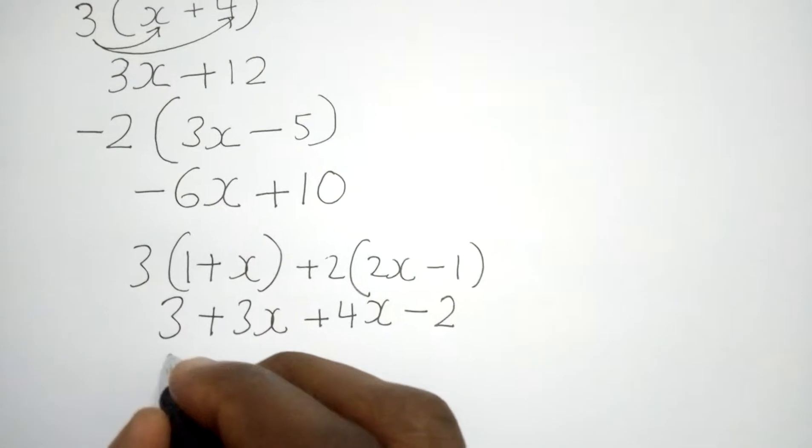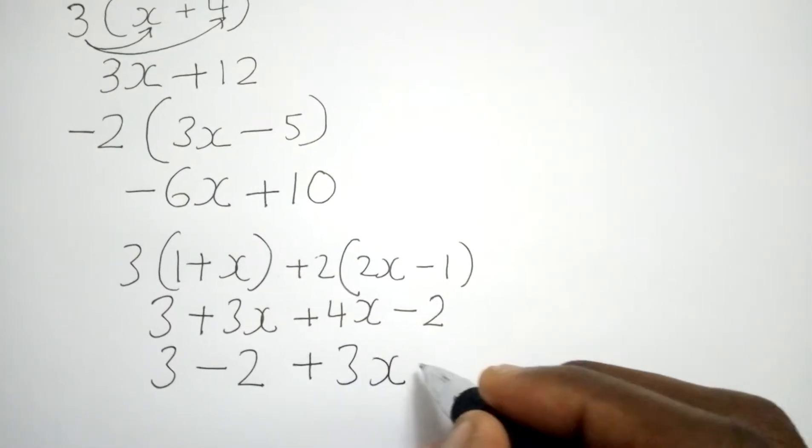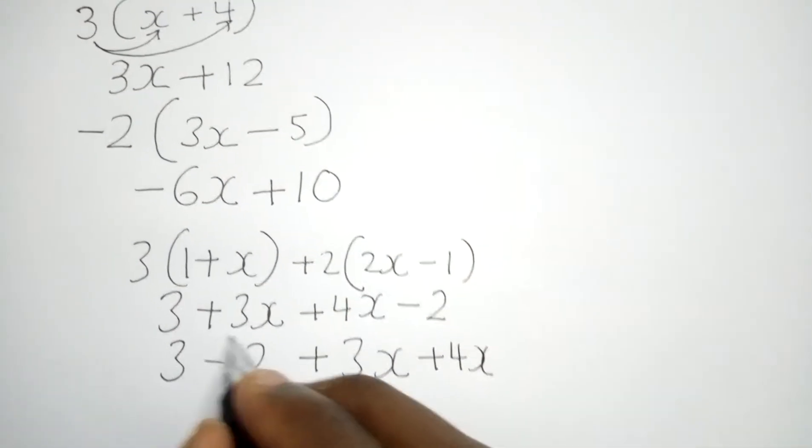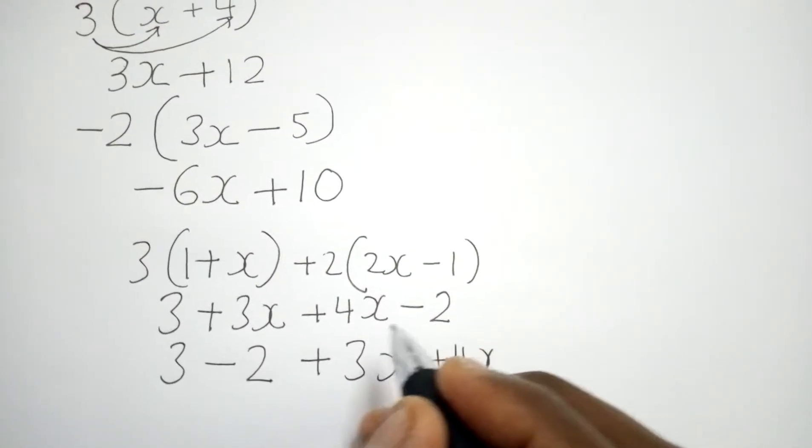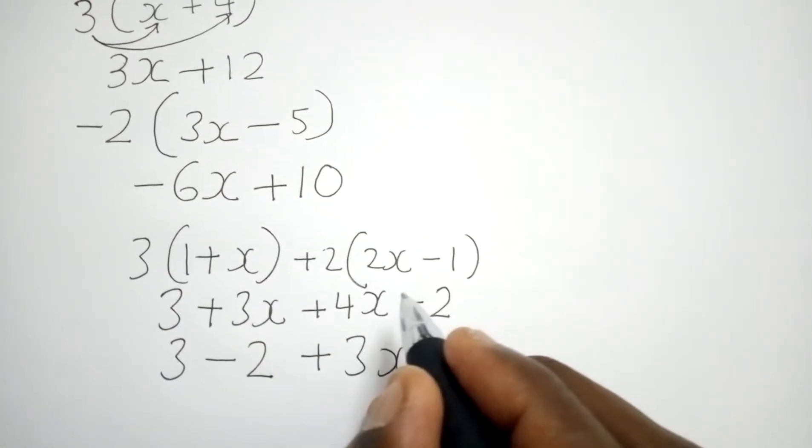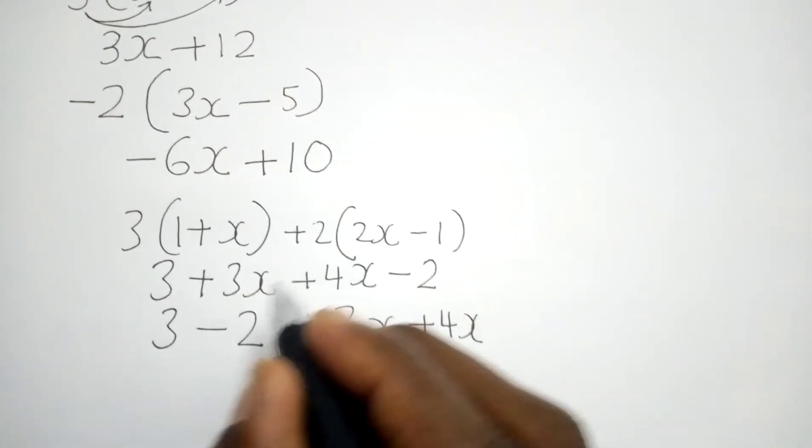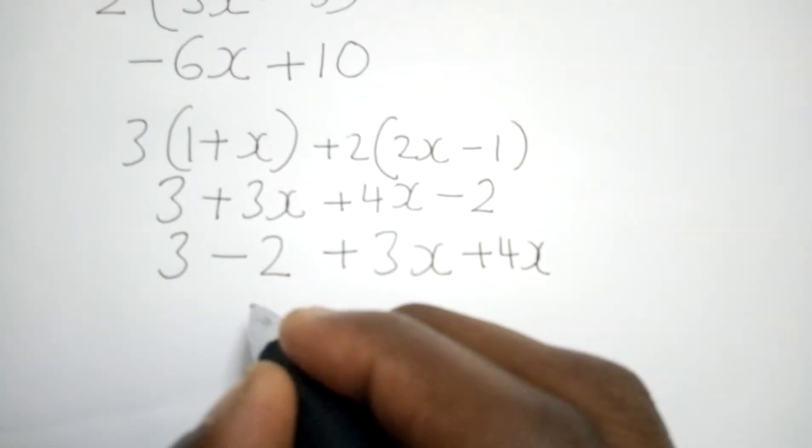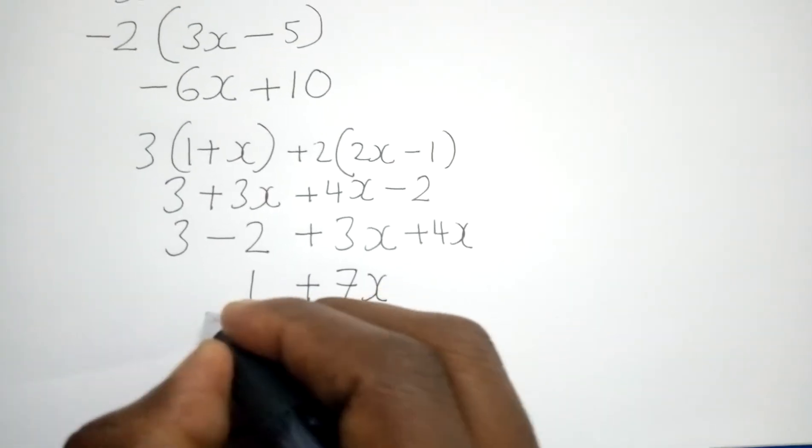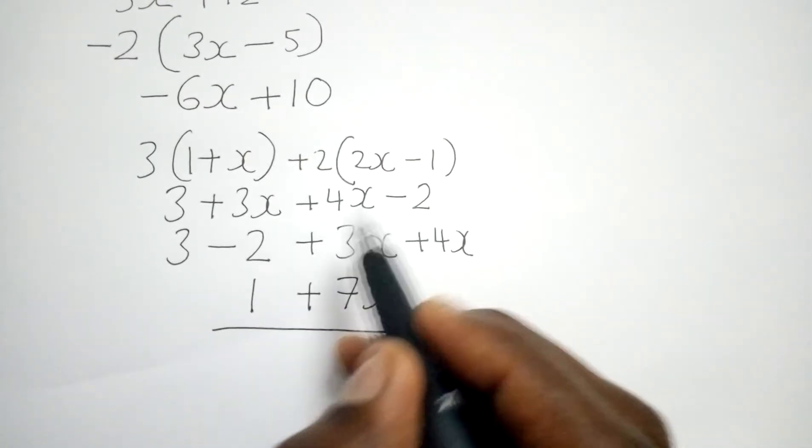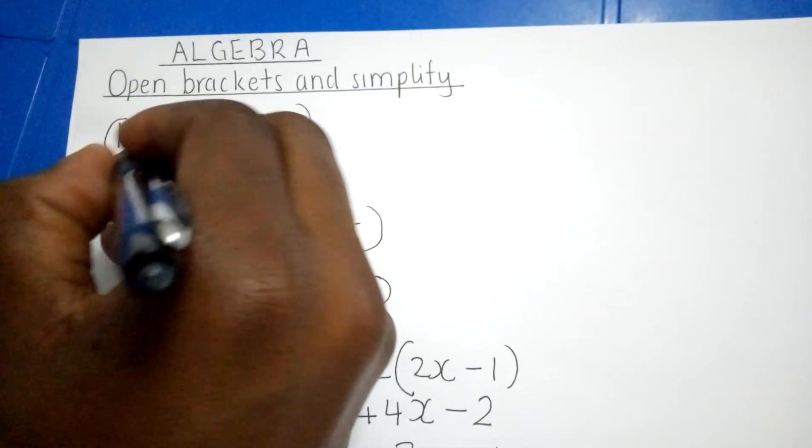After we have opened the bracket like how we can see now, we collect like terms so that we can simplify. So 3 minus 2 plus 3x plus 4x. Remember when I'm removing minus 2 to bring it closer to 3, the sign of 2 will not change because I am not going over equal sign. I am still on the same side. So this will give me 1 and this will give me 7x.